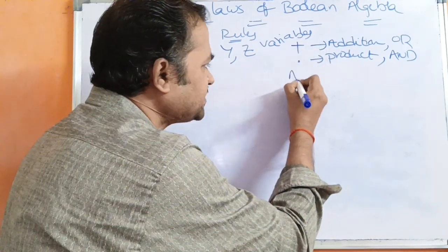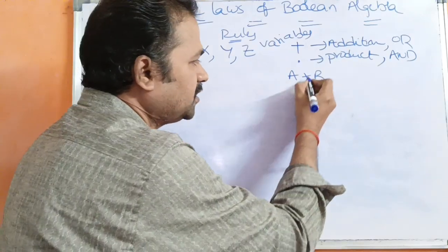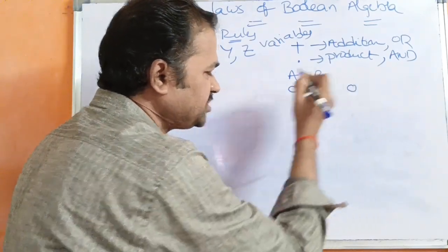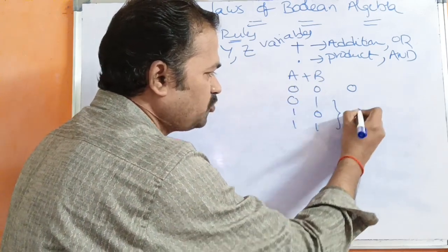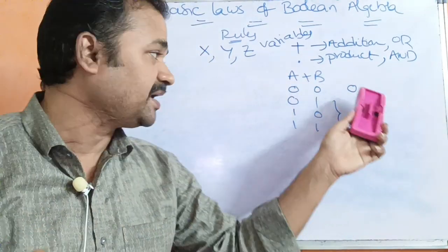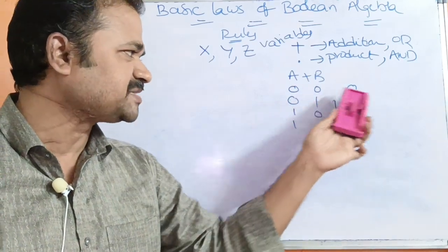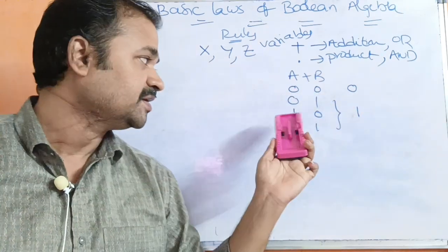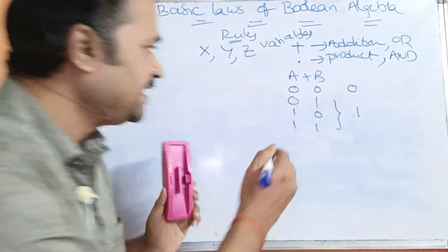We can write OR as a plus b. If both inputs are 0, the output is 0. Otherwise, if inputs are 0 and 1, 1 and 0, or 1 and 1, the output returns 1. So 0 plus 0 equals 0, and any combination with a 1 returns 1 as the output.